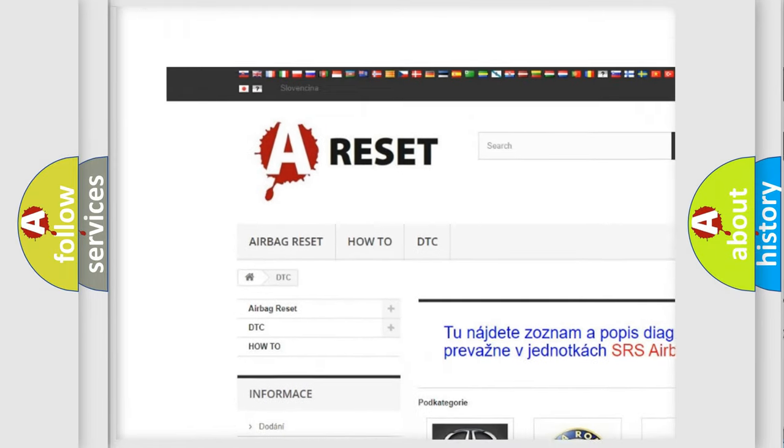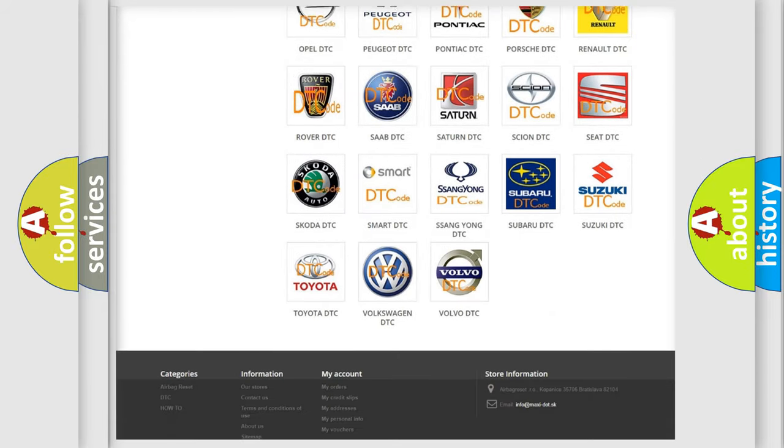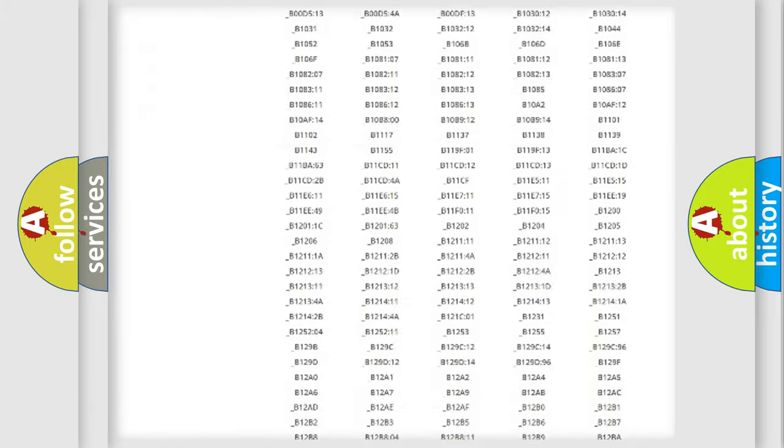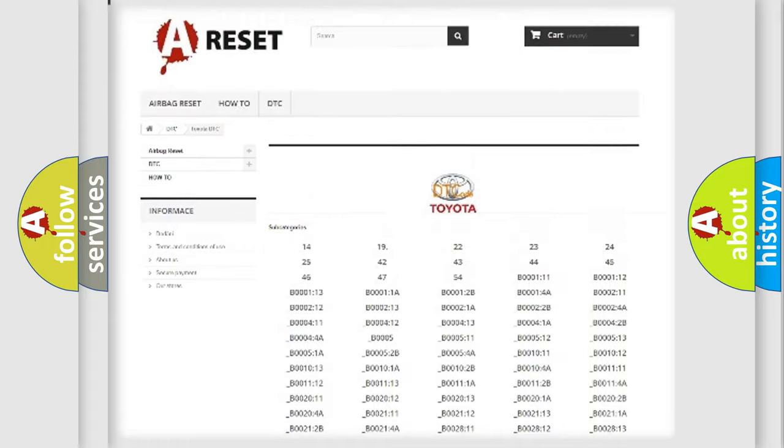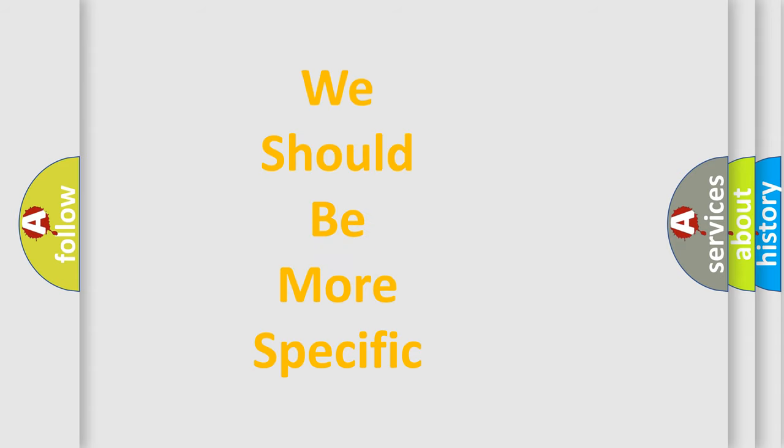Our website airbagreset.sk produces useful videos for you. You do not have to go through the OBD2 protocol anymore to know how to troubleshoot any car breakdown. You will find all the diagnostic codes that can be diagnosed in Toyota vehicles, and also many other useful things.